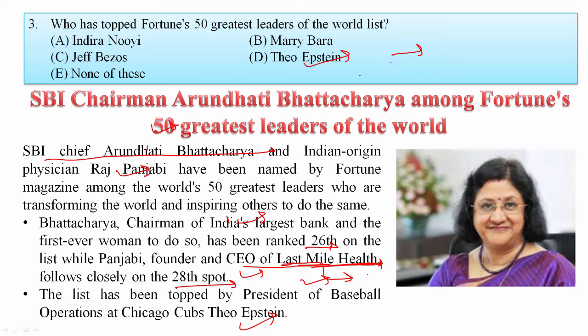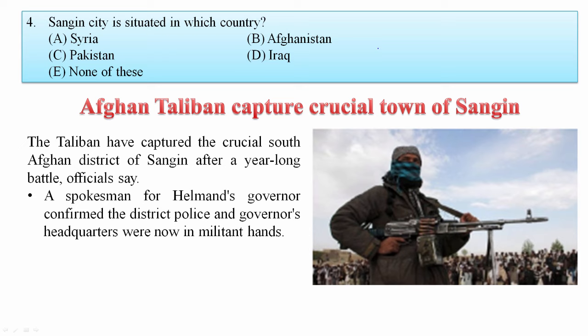Sangin city is situated in which country? This city is important from an exam point of view because recently the Afghan Taliban captured it. The Taliban captured the crucial Afghan district of Sangin after a year-long battle, officially declared by the governor of Helmand. So your answer is B — Afghanistan.